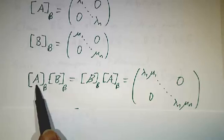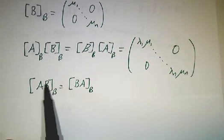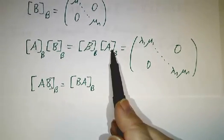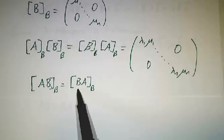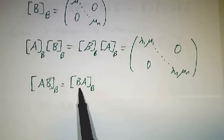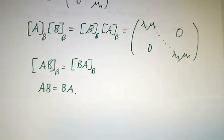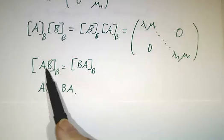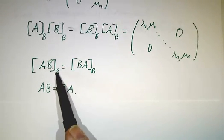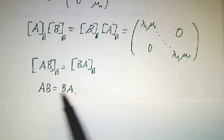But A in the B basis times B in the B basis is AB in the B basis. And B in the B basis times A in the B basis is BA in the B basis. So AB in the B basis is the same thing as BA in the B basis. And that means that AB has to be BA to begin with. The only way that two operators will have the same matrix in the B basis is if they were the same operator to begin with.